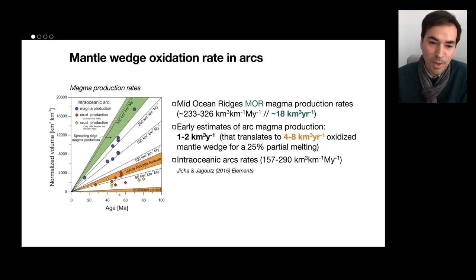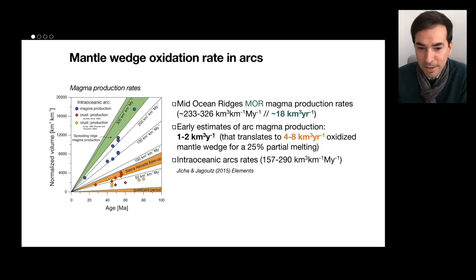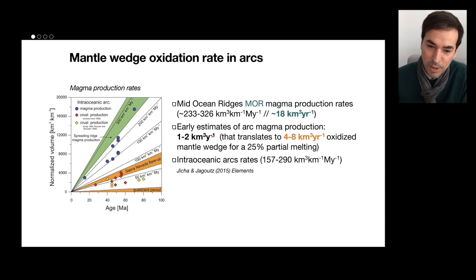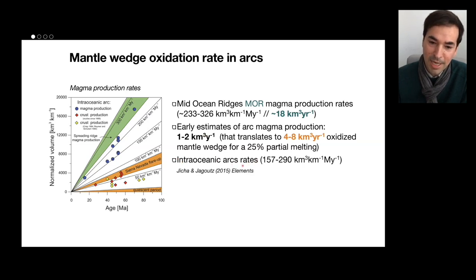When we look at what are the production rates — or let's say the mantle wedge oxidation rate in arcs — we first need to look at what the magma production rates are. The first estimate of arc magma production rates are probably in the order of 1 to 2 cubic km³ per year, which is like 10% of only the MORB. But if you want to translate this into what amount of arc or mantle wedge you need to oxidize in order to produce these magmas, you get values in the order of 4 to 8 cubic km³ per year. There are some more recent estimates that even duplicate these numbers. So we really have a mass problem here.